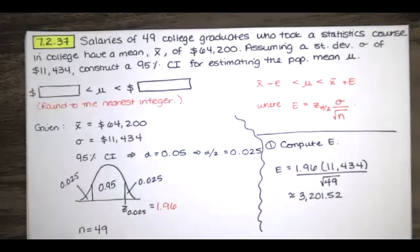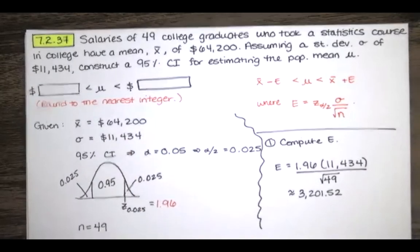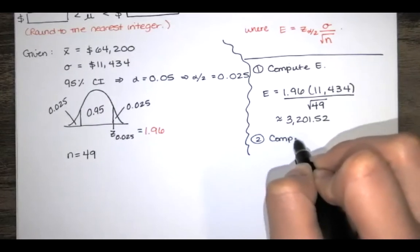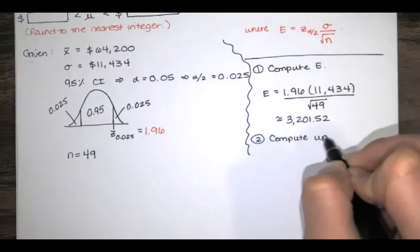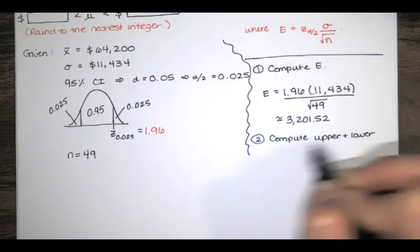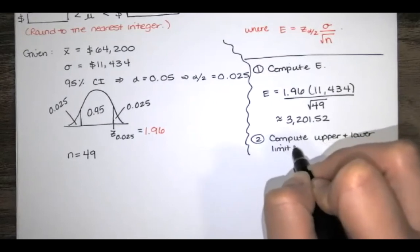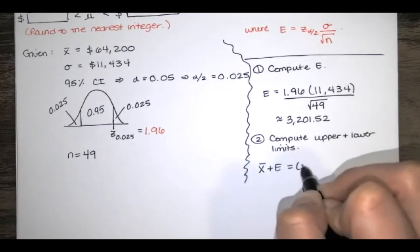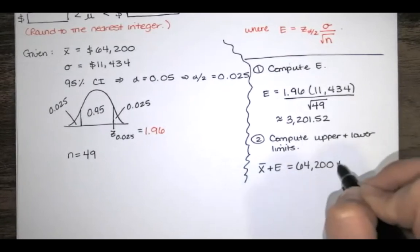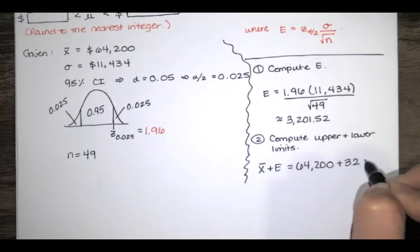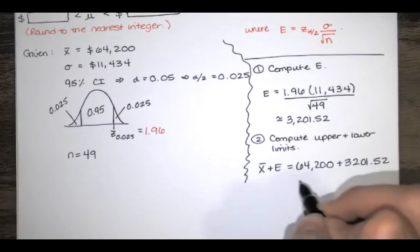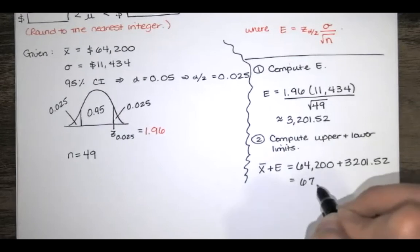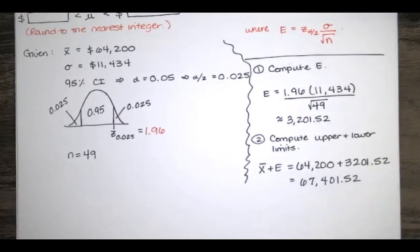And we know what X bar is. So we want to now compute the upper and lower limits for our confidence interval. So we've got X bar plus the error. That's 64,200 plus 3,201 and 52 cents. So we're going to have 67,401 and 52 cents for our upper limit.